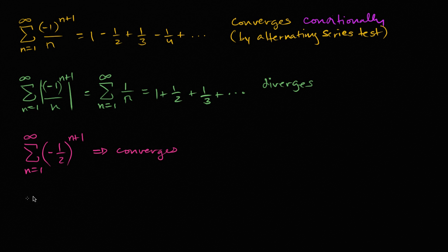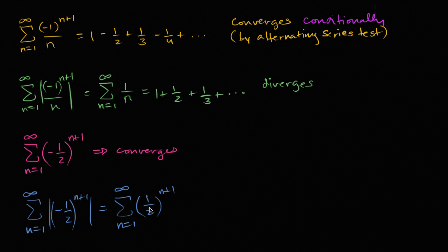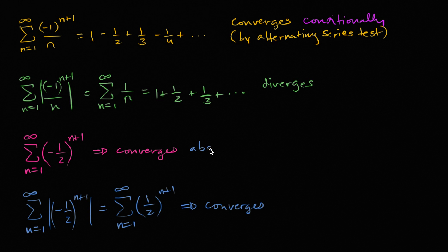And if we were to take the absolute value of each of these terms — the sum from n equals one to infinity of the absolute value of negative one-half to the n plus one power — this is the same thing as the sum from n equals one to infinity of one-half to the n plus one. Here again the absolute value of the common ratio is less than one, so this also converges. Since it still converged when we took the absolute value of the terms, we can say this converges absolutely.